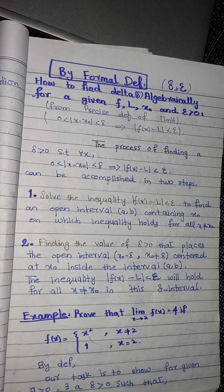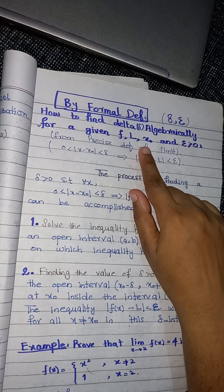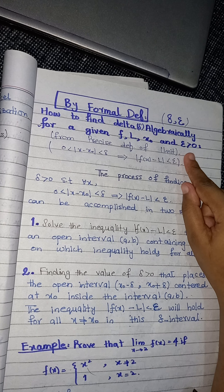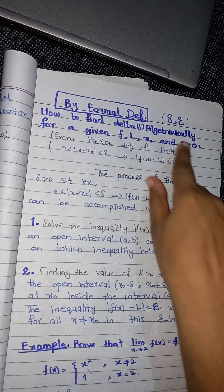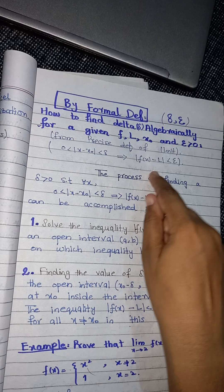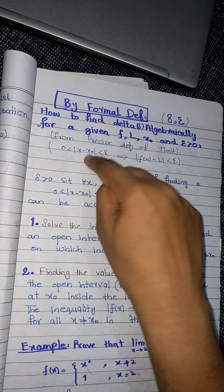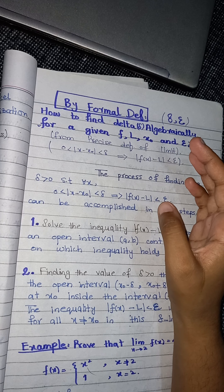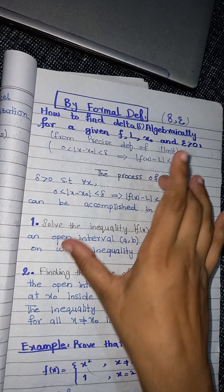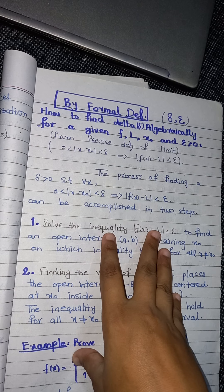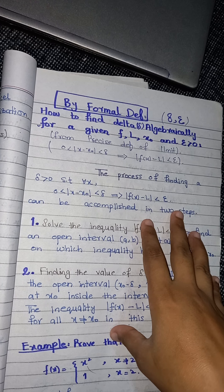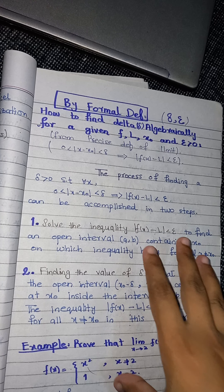I write here how to find delta algebraically for a given f, l, x naught, and epsilon greater than zero. From our precise definition, this condition implies the limit exists whenever the delta condition holds. Sometimes a question will ask you to find delta for a particular problem, and then you can use the formal definition. Let us see this procedure and then move to an example.